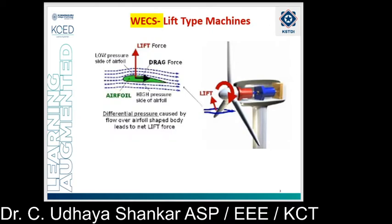First, we will be discussing lift type machines in wind energy conversion systems. Wind turbines make use of either the lift force or the drag force to cause motion, and accordingly they are classified as lift type machines and drag type machines. In case of lift type machines, the ratio of lift to drag forces may be as high as 30 to 1.